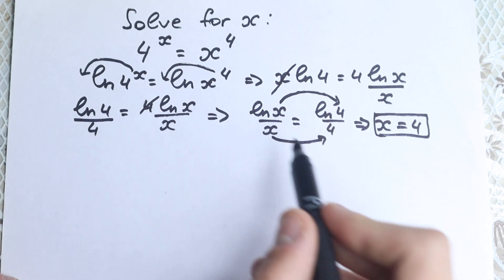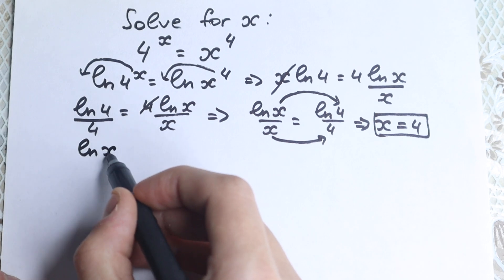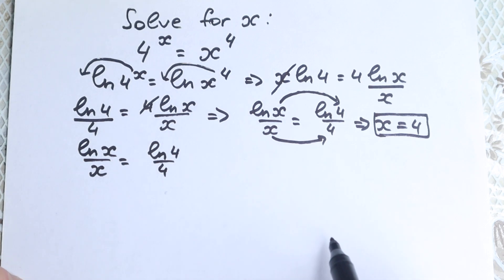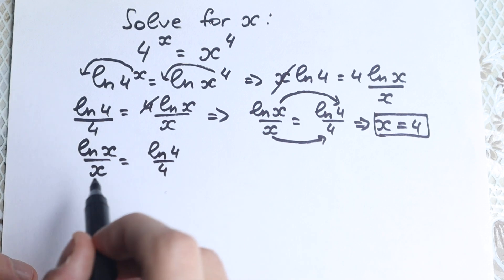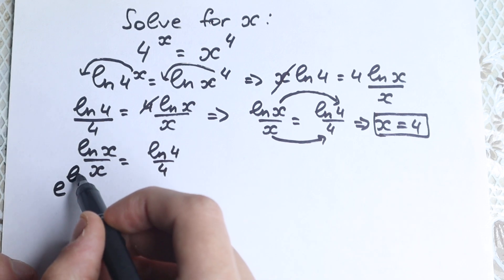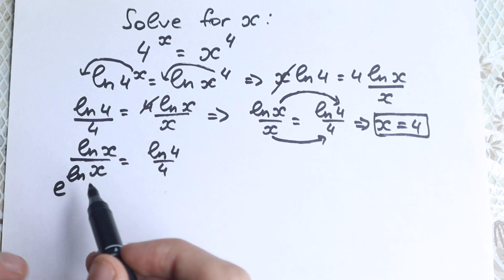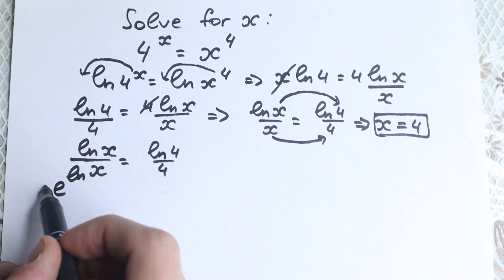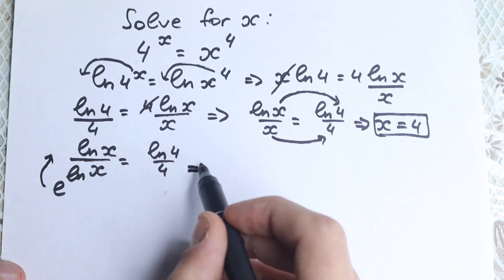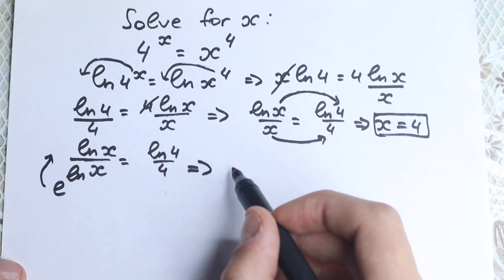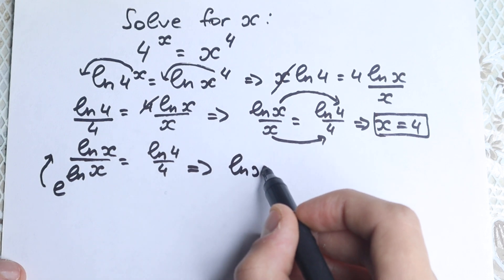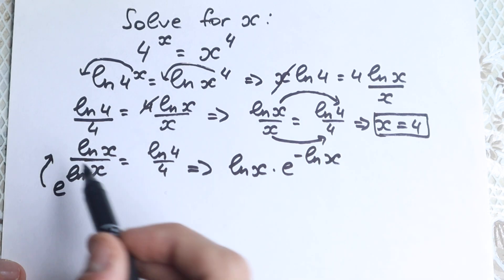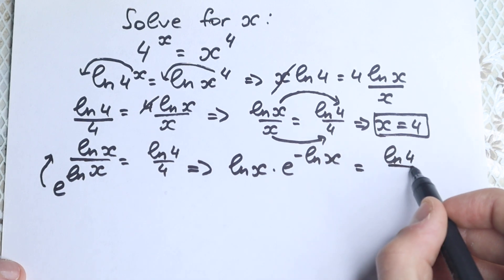Let's rewrite the expression natural log(x)/x = natural log(4)/4 by replacing x in the denominator with e to the power natural log(x). Bringing that from the denominator to the numerator gives us natural log(x) times e to the power of minus natural log(x), equal to natural log(4)/4.